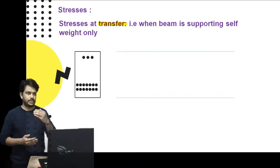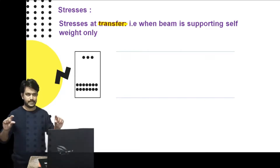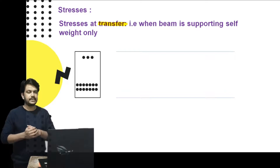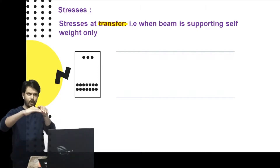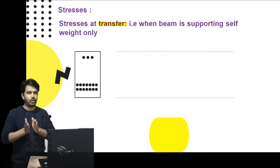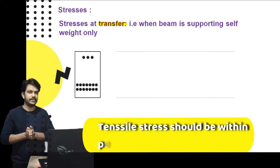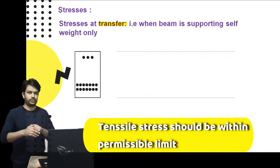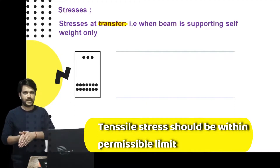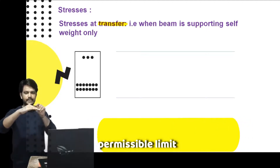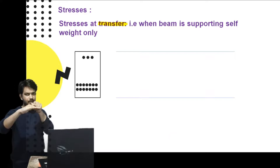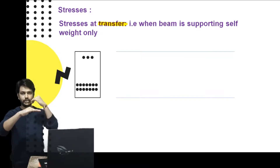At the time of transferring pre-stress to the beam, when it is only supported without any load, the moment induced due to eccentric pre-stressing is hogging in nature. This induces tensile stress on the top fiber and compressive stress on the bottom fiber. Since concrete is weak in tension, we must ensure that the tensile stress at the top stays within permissible limits — otherwise cracking will occur at the top fibers.